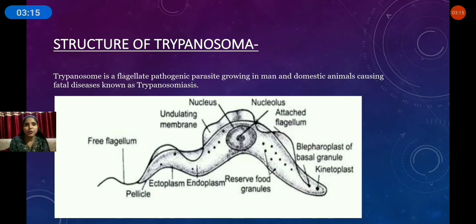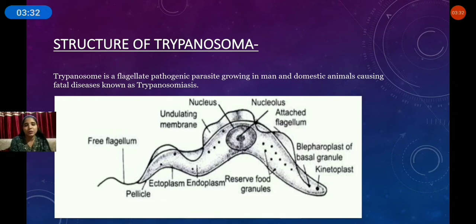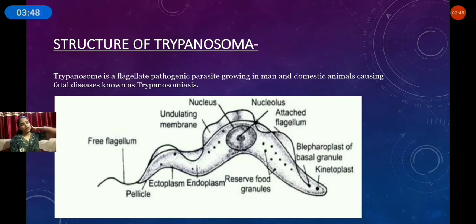Some folds develop which are called the undulating membrane. The outer covering is called the pellicle, and the undulating membrane sits on the pellicle with the help of the flagellum. The pellicle is a protective layer in the organism.